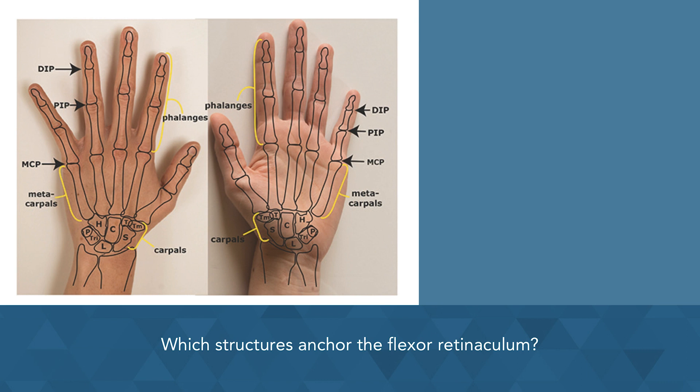The flexor retinaculum is a fibrous band on the palmar side of the hand near the wrist. It arches over the carpal bones, covering them and forming the tunnel. On the ulnar side, the flexor retinaculum attaches to the pisiform bone and the hook of the hamate.